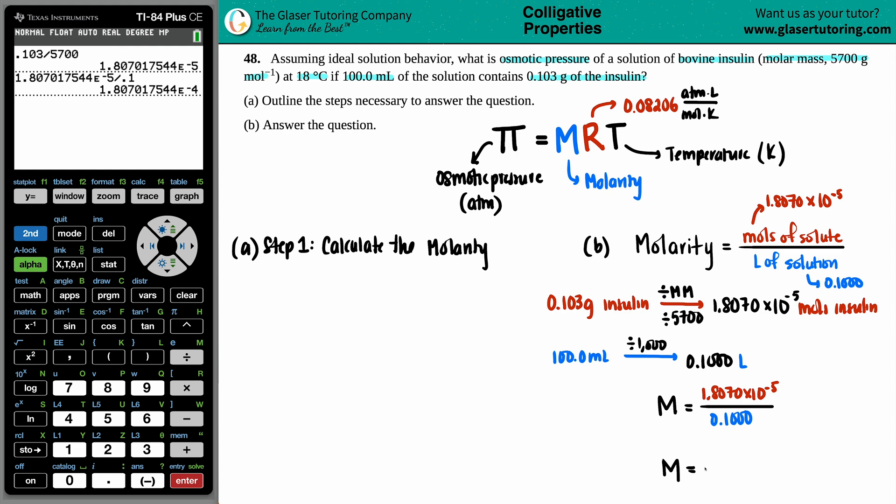So my molarity value equals this value divided by 0.1. Just the same number, 1.8070, but now it's going to be times 10 to the negative 4th. So we got the molarity.